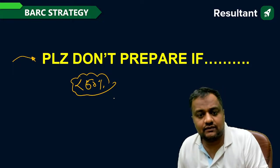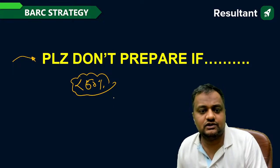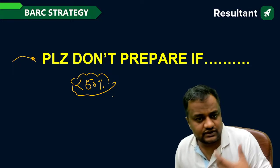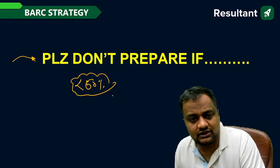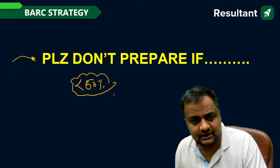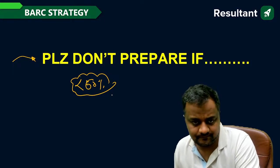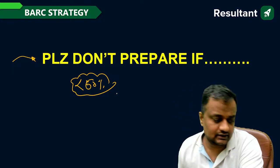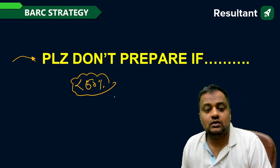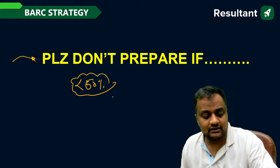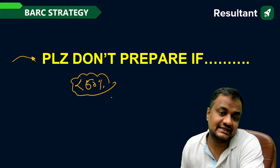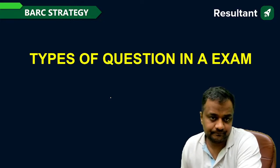What happens with incomplete preparation is that each month you target a different upcoming exam, but without full syllabus coverage you cannot complete it in time, and your preparation remains shallow every time. So first, prepare thoroughly — cover more than 85 percent of the syllabus — and then, once you're in that zone, you can do targeted practice one month before whichever exam is upcoming.